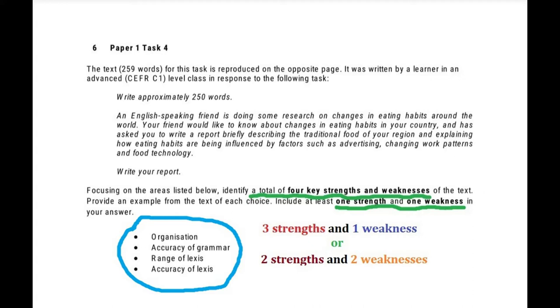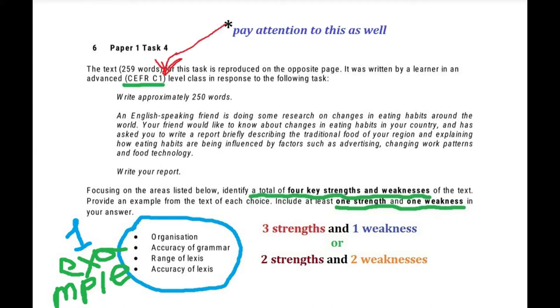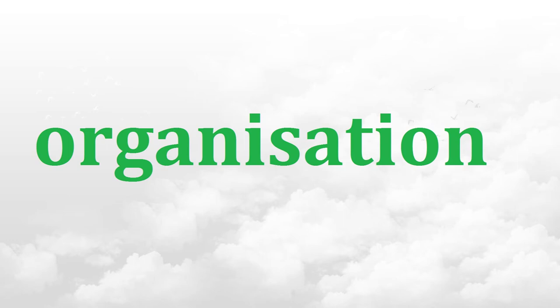More importantly, remember to provide only one example, as your rubric states, because if you provide more than one, the second example will not be credited anyway. Although it might be quite easy to understand what to write for accuracy of grammar, range of lexis, and accuracy of lexis, the organization aspect can raise a question or two — like, what am I supposed to include here? Let me show you what you're expected to write.